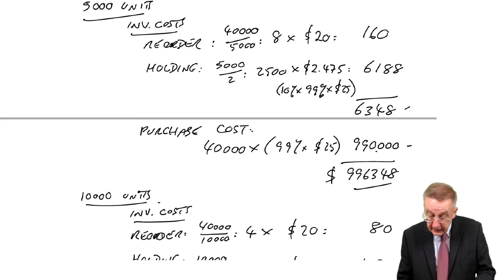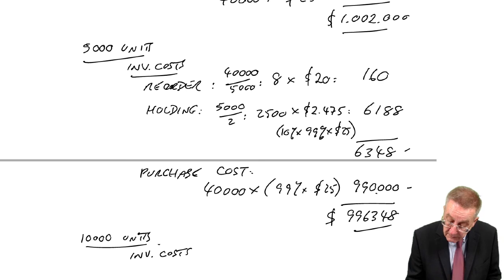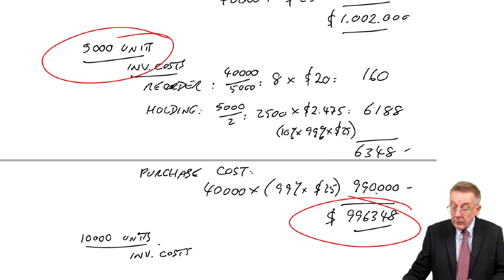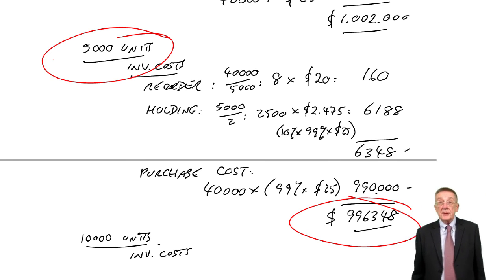$997,000, $996,000, a million. Here, that's the cheapest. And we would therefore order 5,000 units each time.